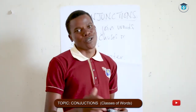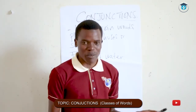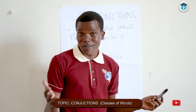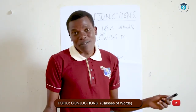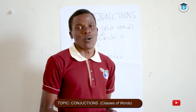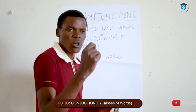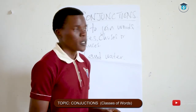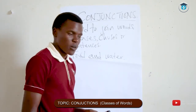Slowly but surely — think of it like a baby learning to sit, then crawl, then stand, then walk. If you know that 'and' is a conjunction and you join words with it, any act of joining uses a conjunction. Apart from 'and,' let's look at another example: 'but.'